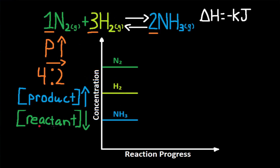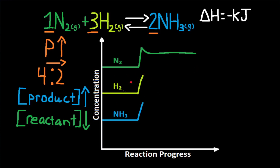Now we simply graph what we described. Since pressure increases, everything increases first — N2 increases, H2 increases, and NH3 increases. If pressure had decreased, everything would decrease first. Then we graph the effect of the shift: N2 is a reactant and reactants decrease, so N2 decreases. H2 is also a reactant so it decreases. NH3 is a product and products increase, so NH3 increases some more.